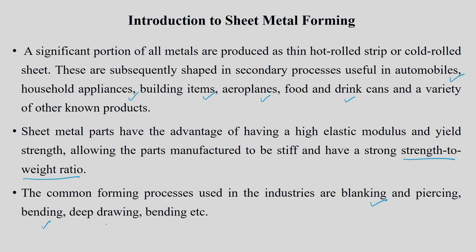What are the common sheet forming processes? Bulk forming processes are of different types — for example, forging, extrusion, rolling, and wire drawing, which we generally study in manufacturing technology courses. Similarly, sheet forming processes can be divided into several types depending on the component to be made: blanking and piercing, bending, deep drawing, roll forming, and others. We are speaking about sheets, but tube forming is also possible to make certain components.